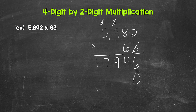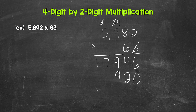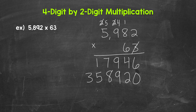Now we move over to the 6 in the tens place, which has a value of 60. So we need a 0 right here before we start multiplying. Now that we have that 0, we can multiply. We'll start with 6 times 2, which gives us 12 — write our 2, carry the 1. Now we have 6 times 8, which is 48, plus 1 is 49 — write the 9, carry the 4. Now we have 6 times 9, which is 54, plus 4 is 58 — write the 8, carry the 5. And now we have 6 times 5, which is 30, plus that 5 is 35. We write our 5, and then there aren't any more places to the left, so we bring that 3 straight down. So 5,982 times 60 gives us 358,920.